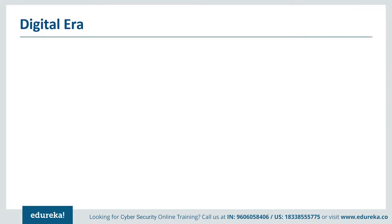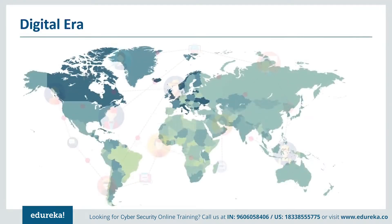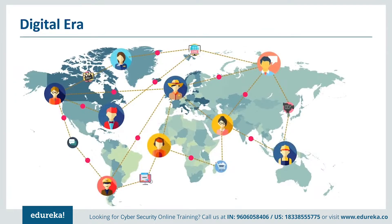The internet today informs, entertains and connects us — it's the backbone of the global economy. Our devices, which are connected through the internet and other networks, open up a world of possibilities. For example, we can access information without having to keep it on our devices permanently, and we can easily communicate with others who are on the other side of the world. But these connections also leave our devices vulnerable to damage and our information vulnerable to theft.